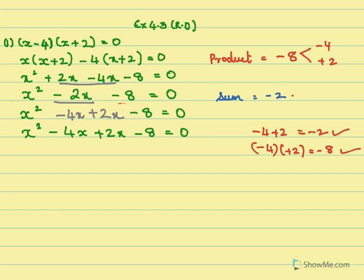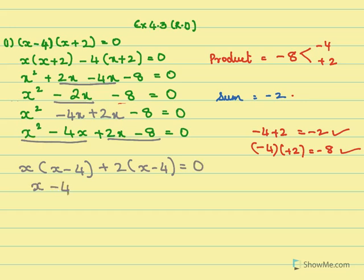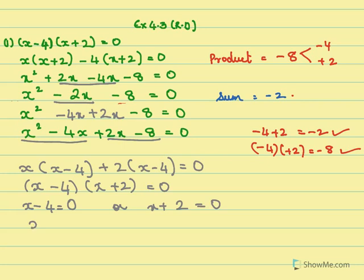We need to take common factors out. From the first two terms we take x common: x(x minus 4). From the next two terms we take plus 2 common: plus 2(x minus 4) equals 0. So we have (x minus 4) common from both terms, giving (x minus 4)(x plus 2) equals 0. So x minus 4 equals 0 or x plus 2 equals 0, meaning x equals 4 or x equals minus 2.